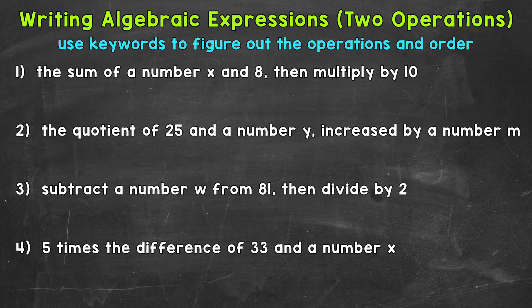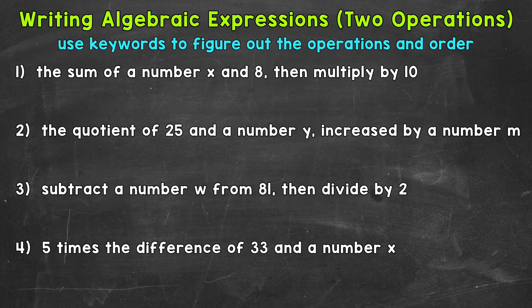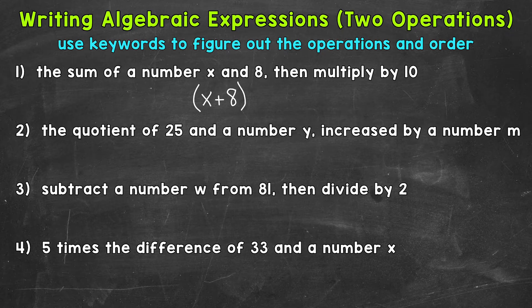Let's jump into our examples and start with number 1: the sum of a number x and 8, then multiply by 10. The first thing we need to do is the sum of a number x and 8. Our key word is 'sum' — that means the answer to an addition problem. So we are going to add x plus 8. I'm going to use parentheses to show that we have to do that first, based on the order of operations.